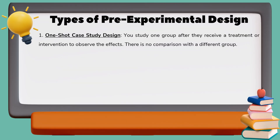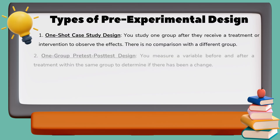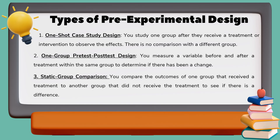In one-shot case study design, you study one group after they receive a treatment or intervention to observe the effects — there is no comparison with a different group. In one-group pre-test post-test design, you measure a variable before and after a treatment within the same group to determine if there has been a change. In static group comparison, you compare the outcomes of one group that received a treatment to another group that did not, to see if there is a difference.